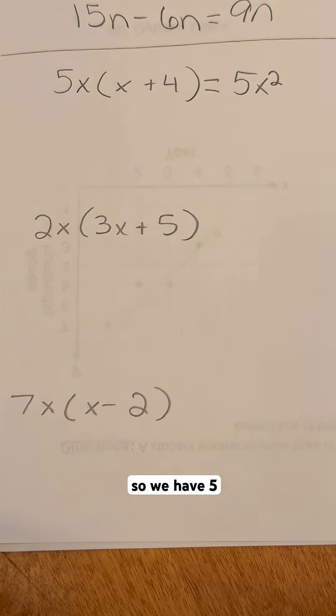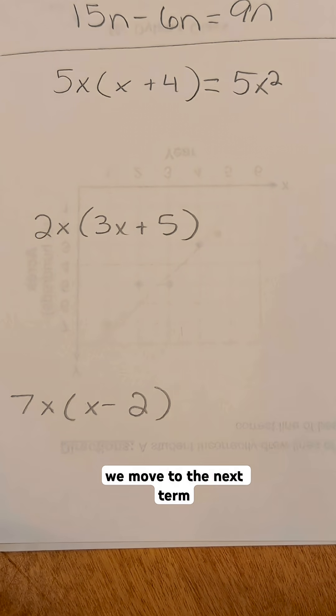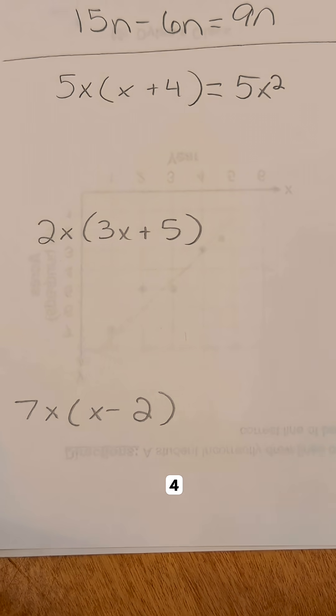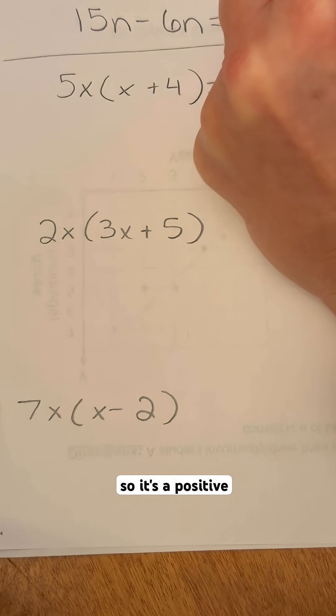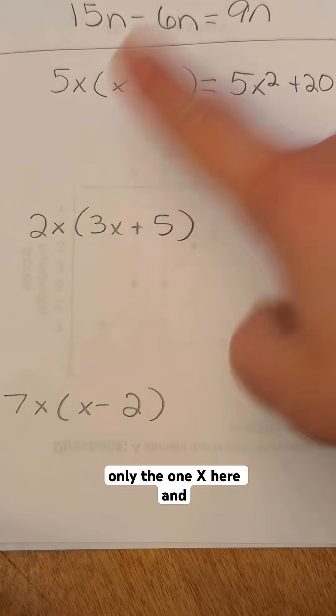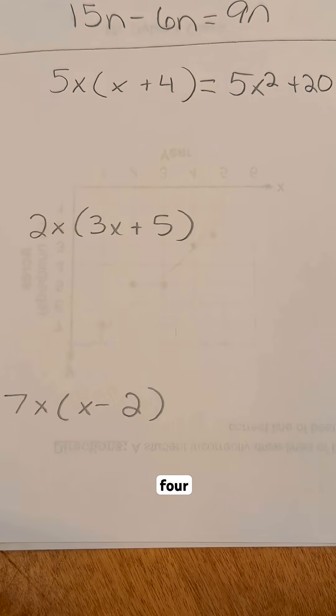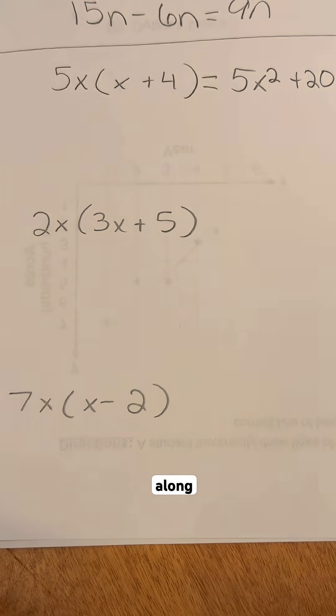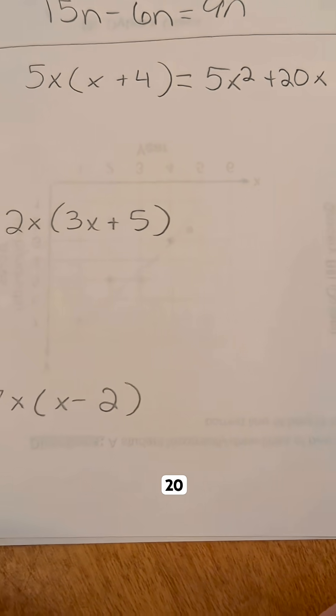So we have 5x squared, and then we go on and move to the next term inside the parentheses, which is the plus four. Five times four is 20, and because there's only the one x here and there's not an x after that four, we're just going to take that x along with us and we get 20x.